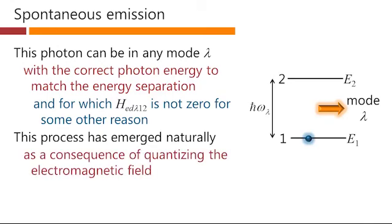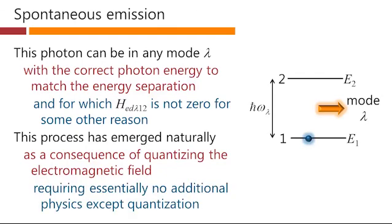Note that this process has emerged naturally. It's a consequence of quantizing the electromagnetic field. Remember that if we did not quantize the electromagnetic field, then with no applied field in the problem, the electron would just have stayed in state 2 forever. That's not what happens and this has required essentially no additional physics except the quantization of the radiation field.